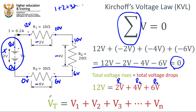And we can state this another way, and this is the expression of Kirchhoff's voltage law that you're most often going to see for a series circuit: the total voltage — in other words the voltage of the source — is equal to the voltage drops across all of the resistors in series, no matter how many resistors there are. If there were a hundred resistors, the voltage drop across all of them would altogether equal whatever the voltage being put into the circuit was.